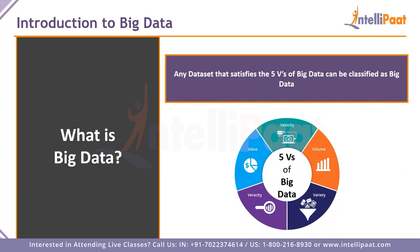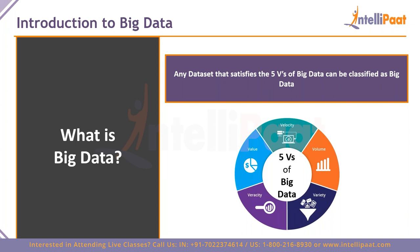The second V is volume — the most obvious one. When you hear 'big data,' this is the first thing that comes to mind: data that is extremely large in size. Anywhere from terabytes to petabytes qualifies as big data on your storage system — hard drive or SSD. The third V is variety — data should be coming in from different sources, not just one.